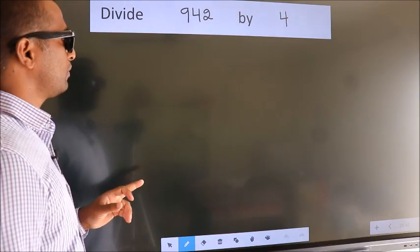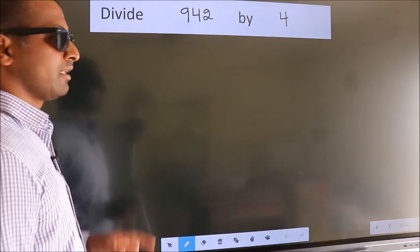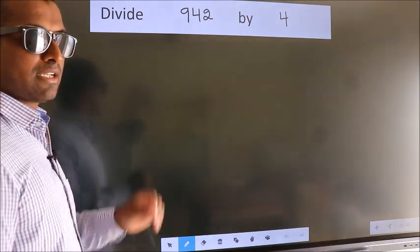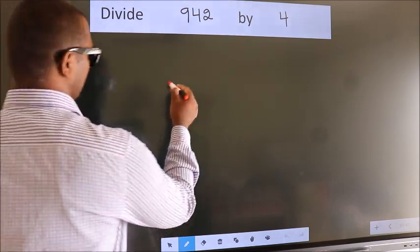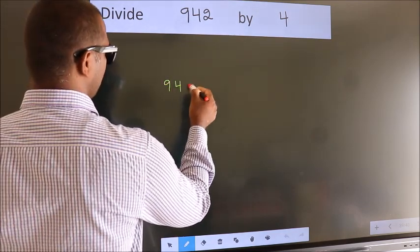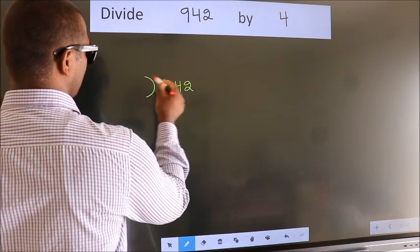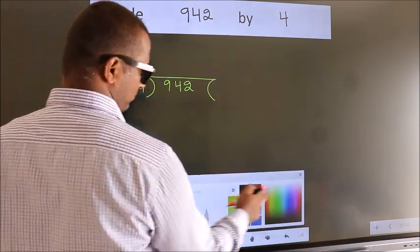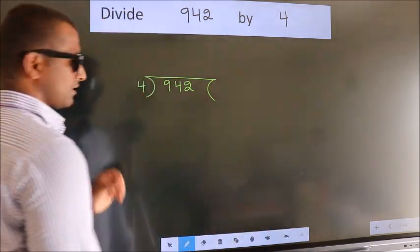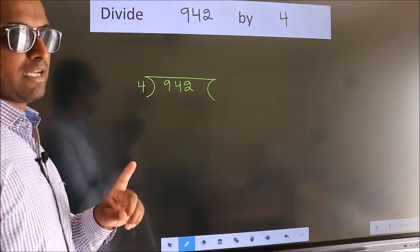Divide 942 by 4. To do this division, we should frame it in this way. 942 here, 4 here. This is your step 1.